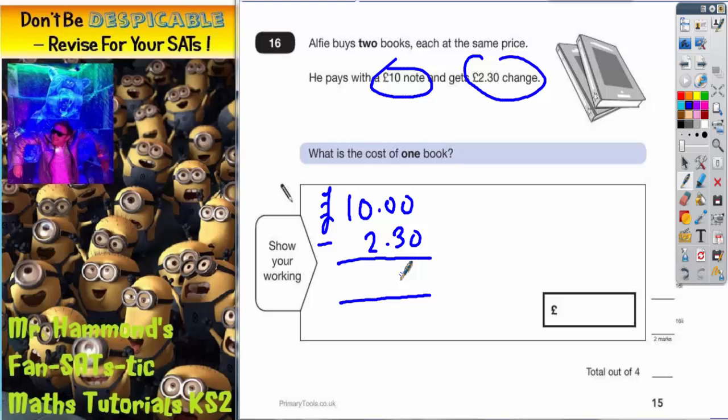...and then if you take two pounds off that again, it's seven pounds seventy. So we must have paid seven pounds seventy for the two books.